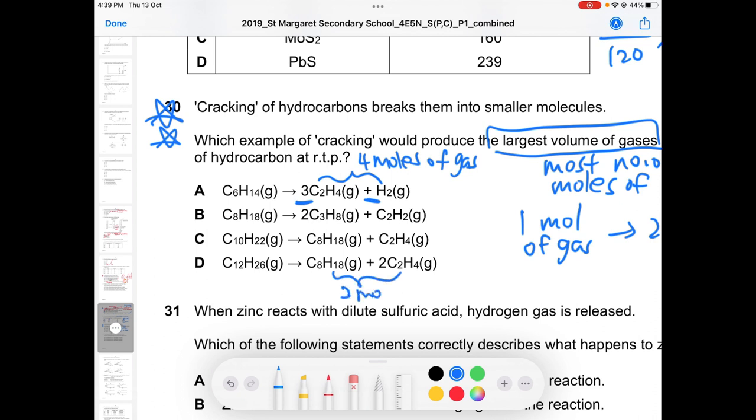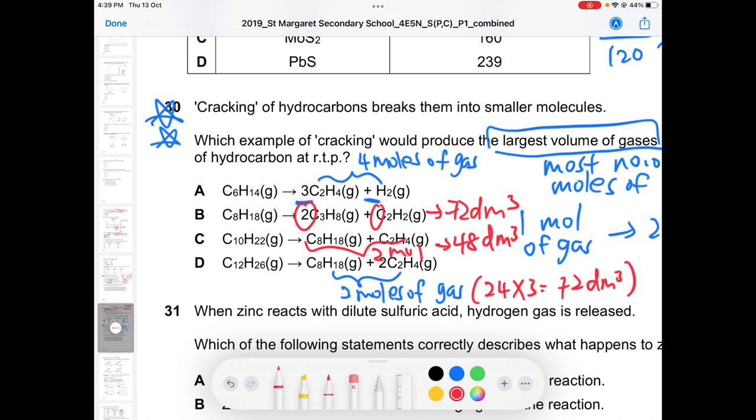This one, this two are three moles of gas. So this is like 24 times 3, 72 dm cubed. Then this one is three moles. Then this one also, two and one, so this is also three moles, this is also 72 dm cubed. Then for option C, one mole plus one mole, I have two moles here. So this is 48 dm cubed. Answer is A because I have four moles of gas, four times 24 dm cubed, you'll get 96 dm cubed.